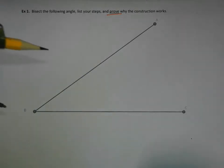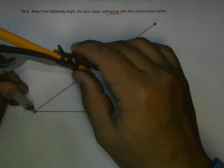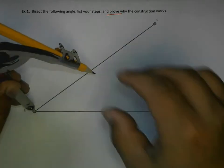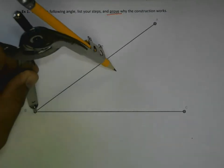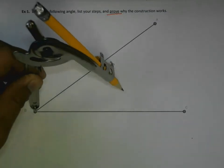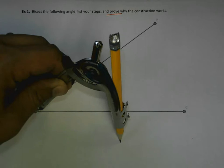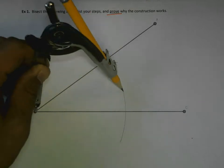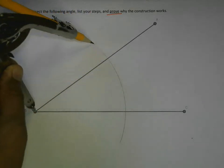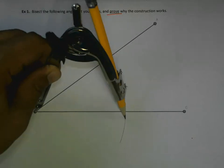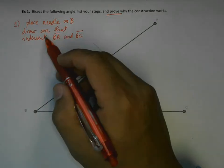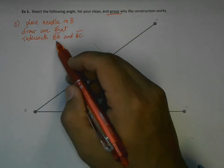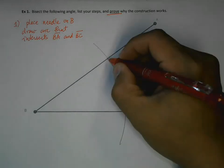The first thing that we're going to do is put the needle on B, extend this pencil, and it can almost be any length you want. So we're going to draw an arc that intersects both rays of angle B. Place the needle on B, draw an arc that intersects BA and BC.